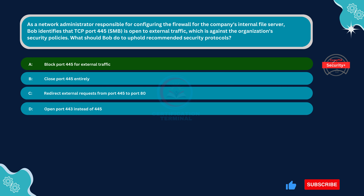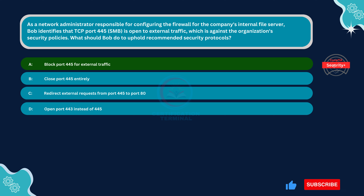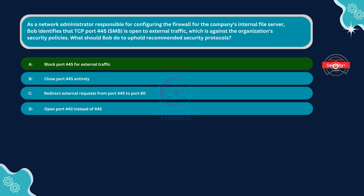The correct answer is Option A, block port 445 for external traffic. Blocking port 445 for external traffic is the appropriate action for Bob to uphold recommended security protocols. Since TCP port 445 should not be accessible from outside the company, Bob should configure the firewall to prevent external traffic from accessing port 445. This ensures the file server remains protected from unauthorized access while allowing internal users to continue using SMB for file sharing.